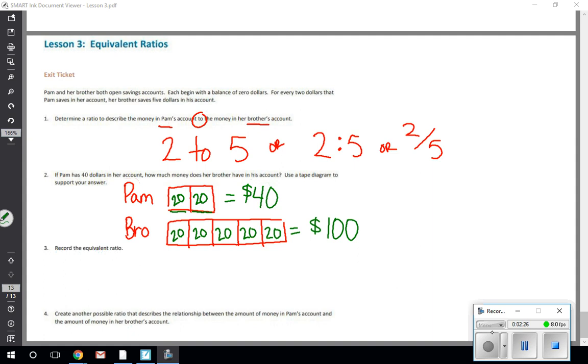So record the equivalent ratio. Our ratio of two dollars to five dollars is equal to forty dollars to one hundred dollars. That's what that one just showed.